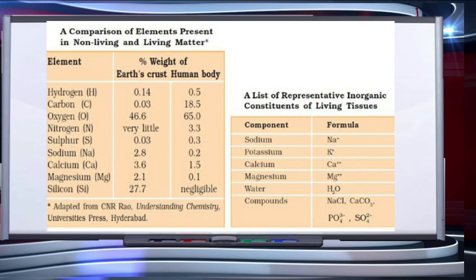This slide shows a comparison of elements present in non-living and living matter. The first column lists elements such as hydrogen, carbon, oxygen, nitrogen, and sulfur. The second column shows their percentage by weight in the Earth's crust versus the human body. For example, hydrogen is 0.14% in Earth's crust but 0.5% in the human body, and carbon is 0.03% in Earth's crust but 18.5% by weight in the human body.